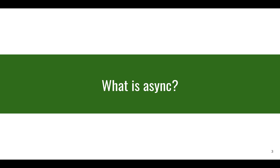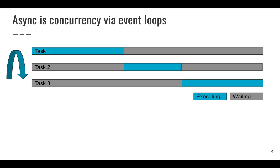Before we can discuss why Flask isn't async, let's define what we mean by async. Async is concurrency via event loops — running multiple tasks concurrently, notably not in parallel, using a single CPU. This is quite nice because it keeps the CPU active, making it more efficient when you have IO.